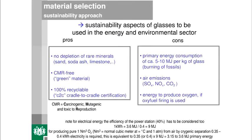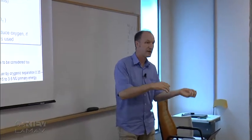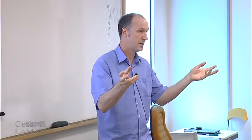Now we have to look at sustainability aspects for glasses in energy and environmental applications. The major sustainability pros: glasses use common, non-rare minerals — sand, soda ash, and limestone as basic materials — no semiconducting materials with precious metals inside. The other key aspect is that glasses are CMR-free: they do not contain carcinogenic, mutagenic, or toxic-to-reproduction metals or materials. This makes glass a green material — very important, because people want a green technology and green material.